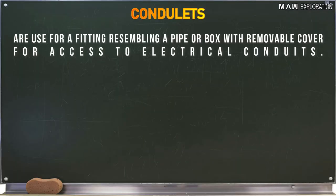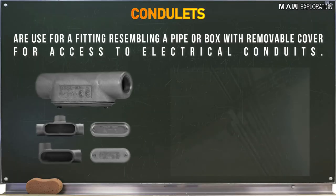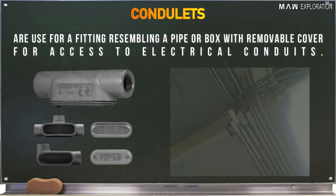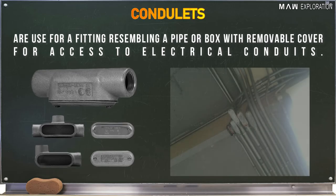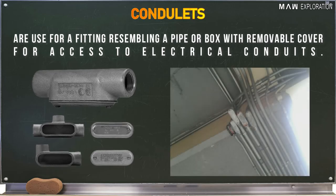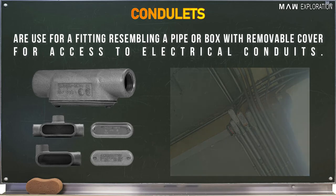Additional conduit types include flexible non-metallic or corrugated plastic conduit, also known as CPC. Condulets are fittings resembling a pipe or box with a removable cover, used for access to electrical conduits.